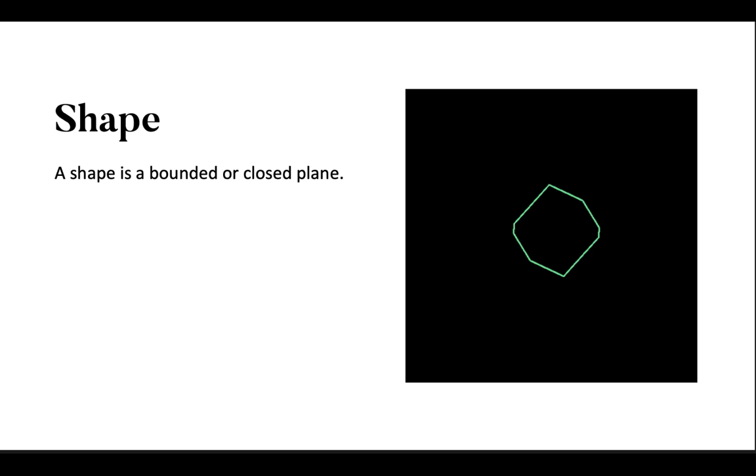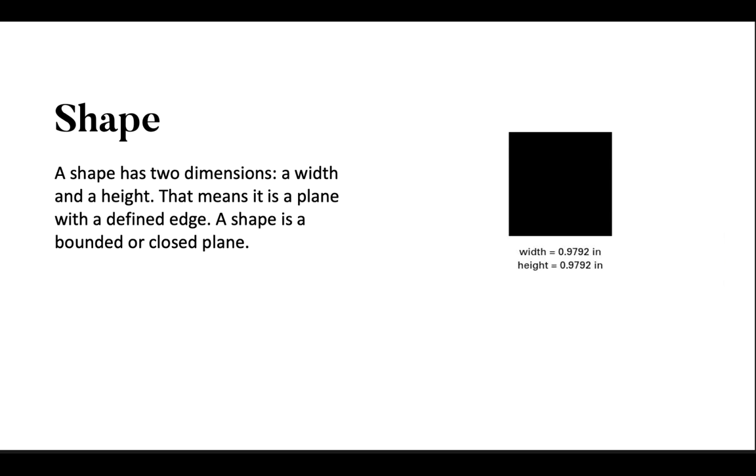When a line closes, it becomes a shape, a bounded or closed plane. Shapes are planes with edges. In a vector-based program like Adobe Illustrator, every shape consists of a line and a fill. Now you may be a bit confused at this point. Planes and shapes sound like the same thing, but a shape is a visually defined or designated area that has two dimensions, a width and height. That means it is a plane with a defined edge. It is a formal element of design and is not conceptual like a plane.